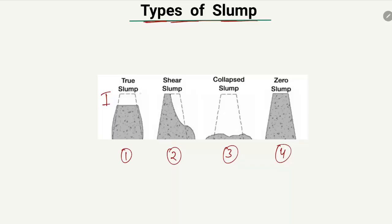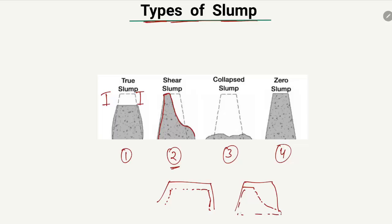In the true slump, the height reduces in a normal, uniform way — this is known as the true slump. In the shear slump, the height reduces in a shear-like manner. This is not a normal reduction — only part of the concrete reduces while the other part remains the same. Because only this portion drops in a shear way, it is called the shear slump.